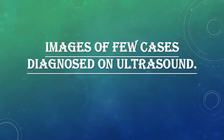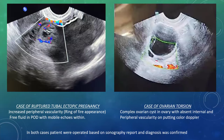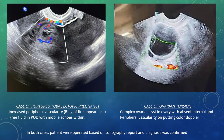Case 1 of ruptured tubal ectopic pregnancy: A complex cystic structure was noted which showed increased peripheral vascularity giving ring of fire appearance on transvaginal sonography. Free fluid was seen in pouch of Douglas which showed multiple mobile echoes suggestive of hemoperitoneum. The second image shows a complex ovarian cyst in ovary with absent internal and peripheral vascularity on color Doppler. In both cases, patients were operated based on the sonography report and diagnosis was confirmed postoperatively.